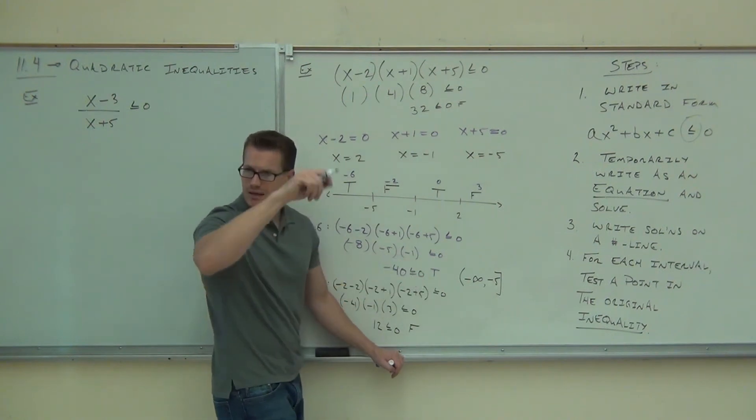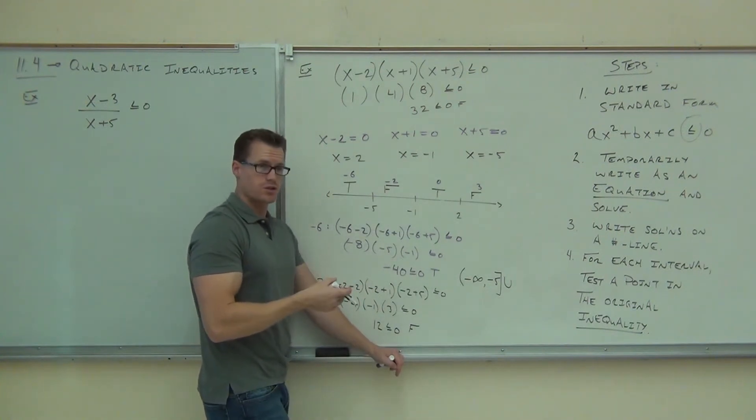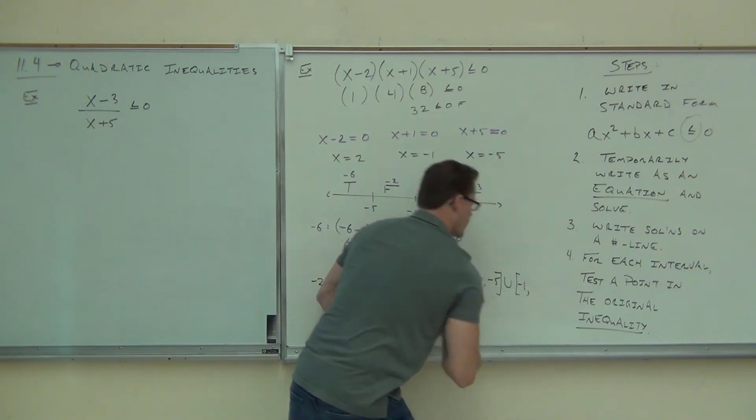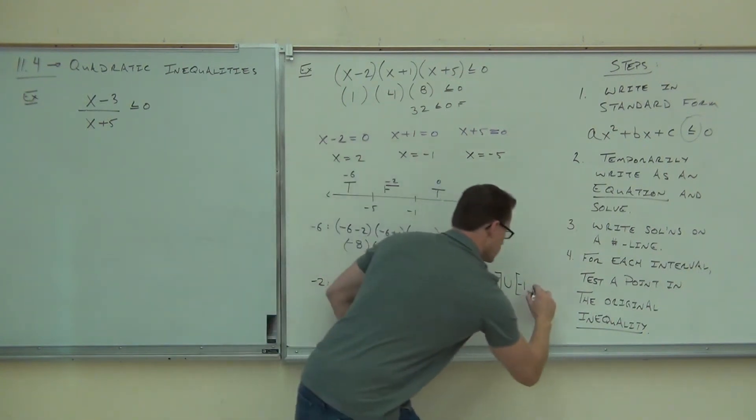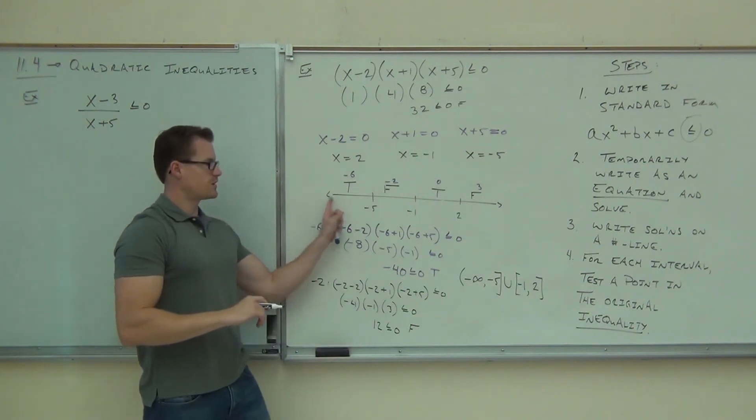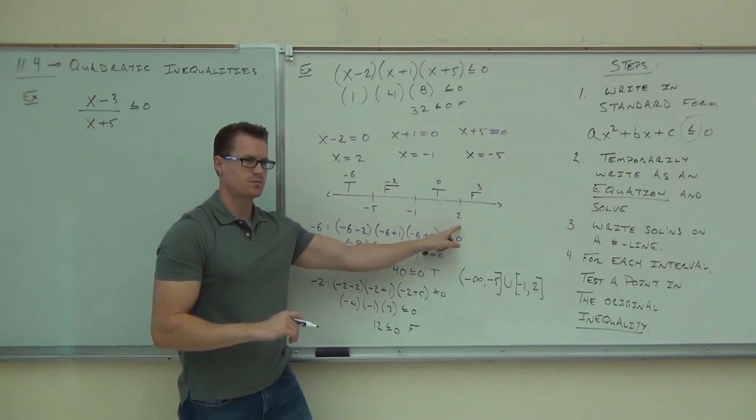So I need that little union thing. And then where's the next interval start? Bracket. Where's it end? 2. Bracket. Anything else? No. Negative infinity to negative 5, not negative 6. Negative 5. Negative 1 to 2. You're done.